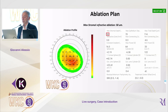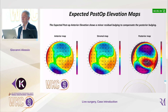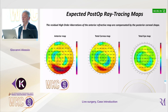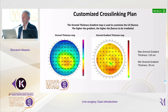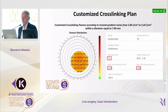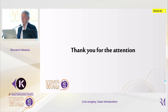The maximum ablation is 58 microns. This is what we expect in terms of the postoperative map — in terms of anterior, total cornea, and total eye. The cross-linking will be a customized cross-linking based on the gradient of pachymetry and with a different energy distribution. Thank you, and we can start.